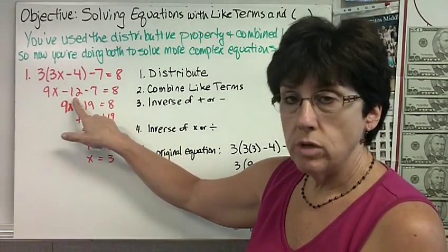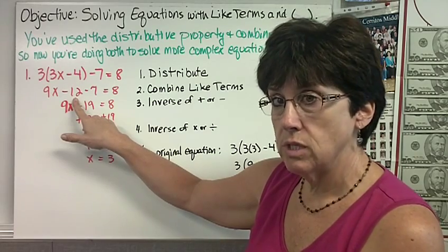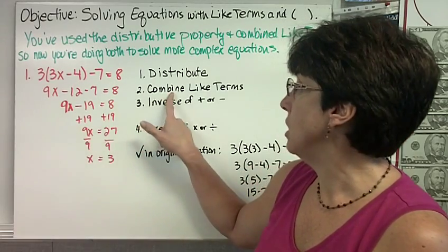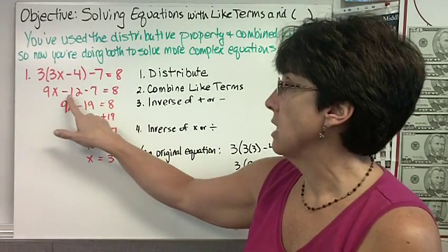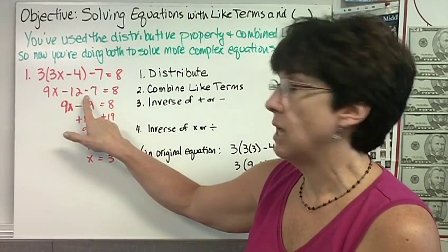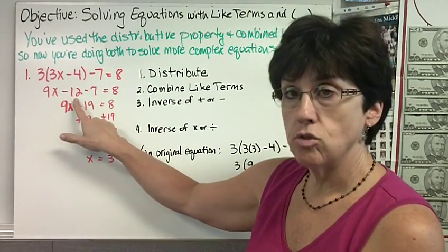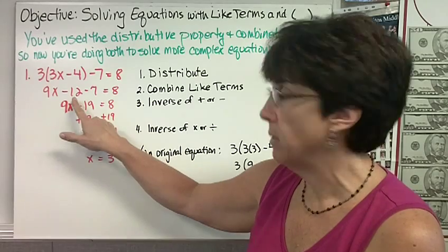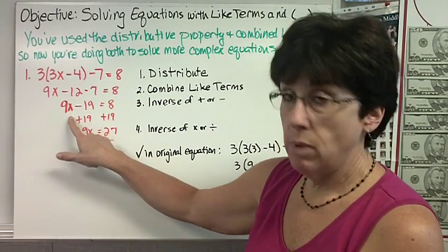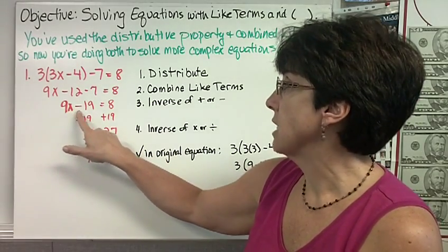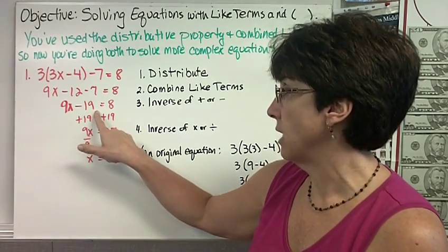If you have more than two terms on one side of your equal sign, you need to combine like terms. I see that I can combine negative 12 and negative 7 — same sign, so I'm going to sum them. Now my equation is 9x minus 19 equals 8.